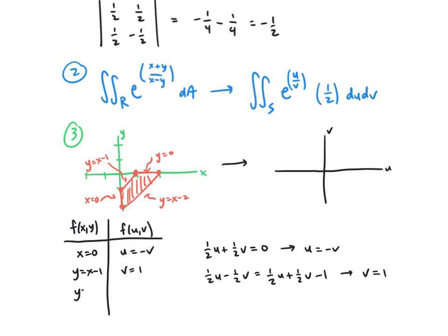Then we have y = 0. So 1/2 u - 1/2 v = 0. And that gives us u = v.